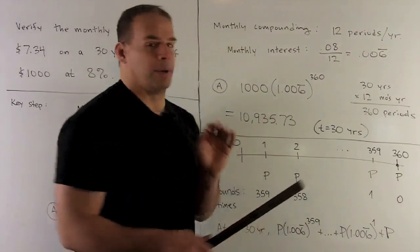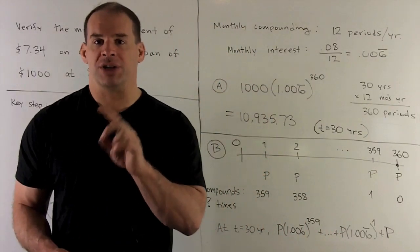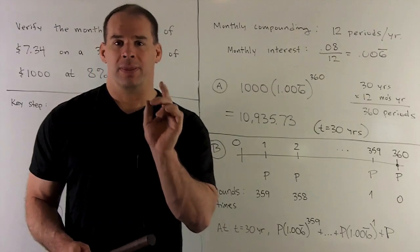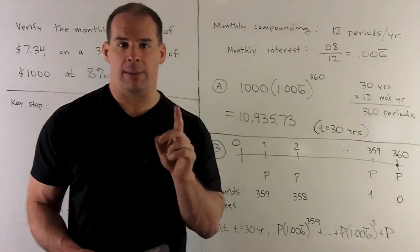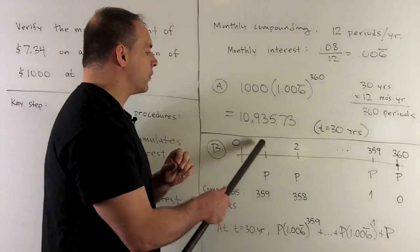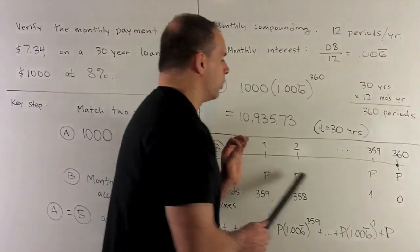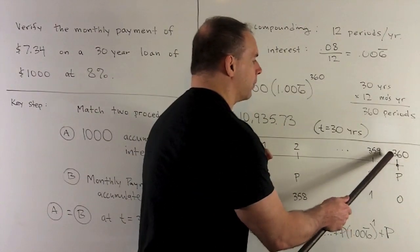Now, note how many payments should I have made, 360 payments. So you'll note the T is going to tell you what number of payment you're on. So here we have the first payment, second payment, and we're going all the way out to payment number 360.